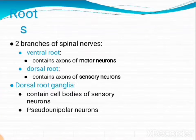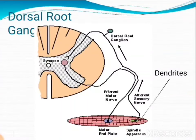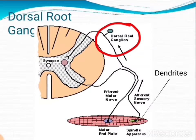The ventral root is motor in function because it contains motor neurons. The dorsal root contains sensory neurons, and there is a dorsal root ganglion on the posterior side containing pseudo-unipolar neurons. On the posterior side we have the dorsal root ganglion with pseudo-unipolar neurons, and on the anterior side we have motor neurons.